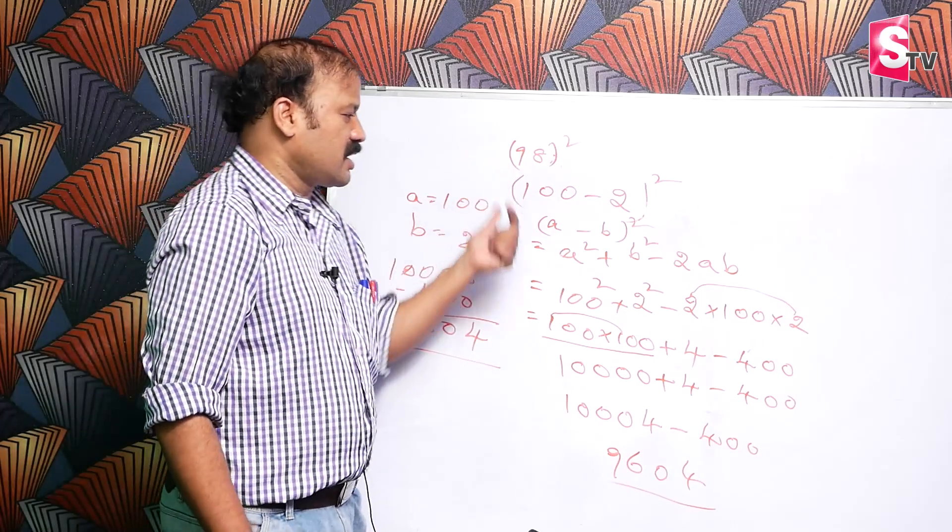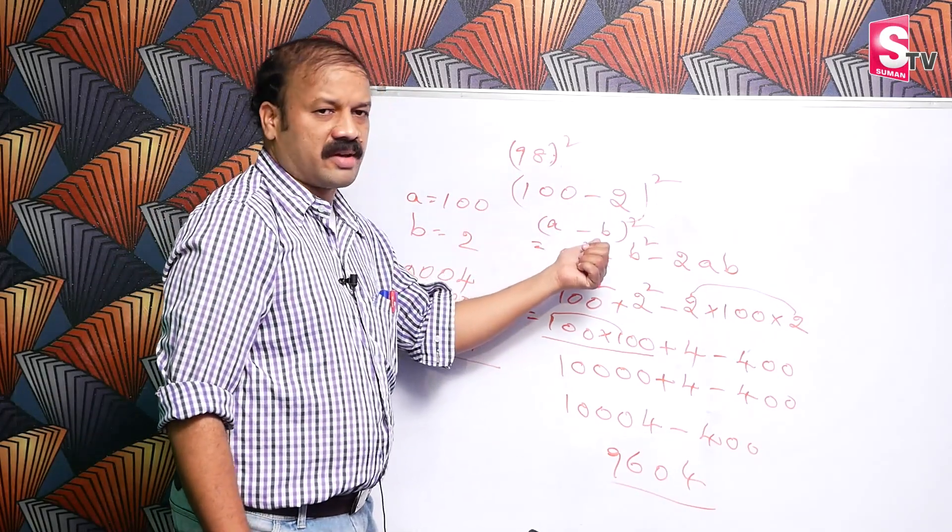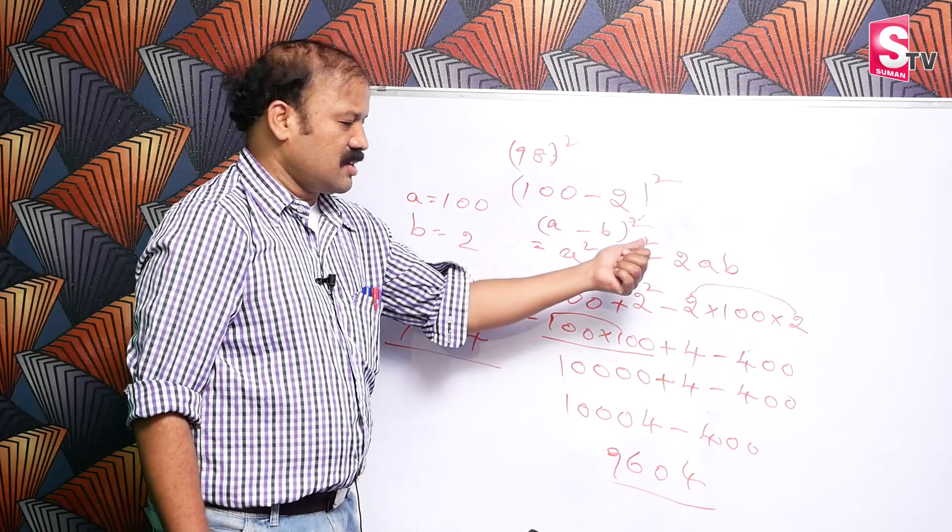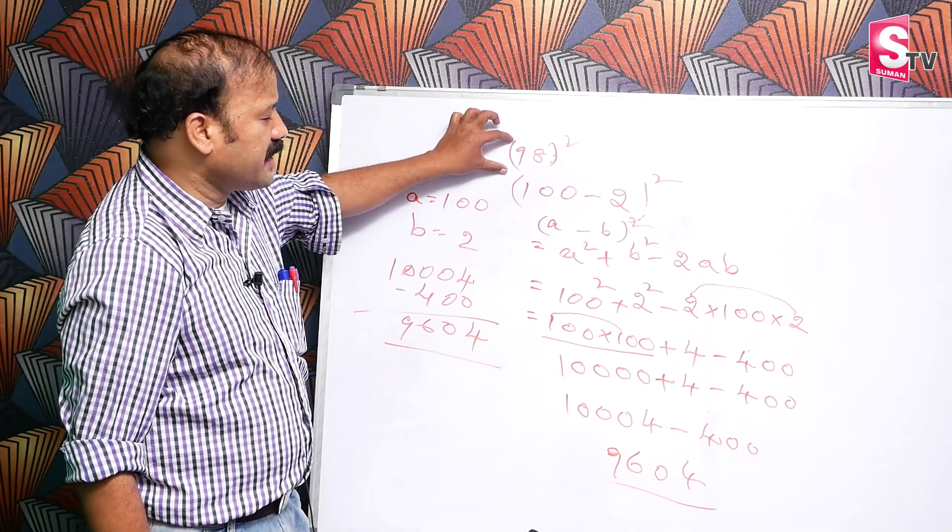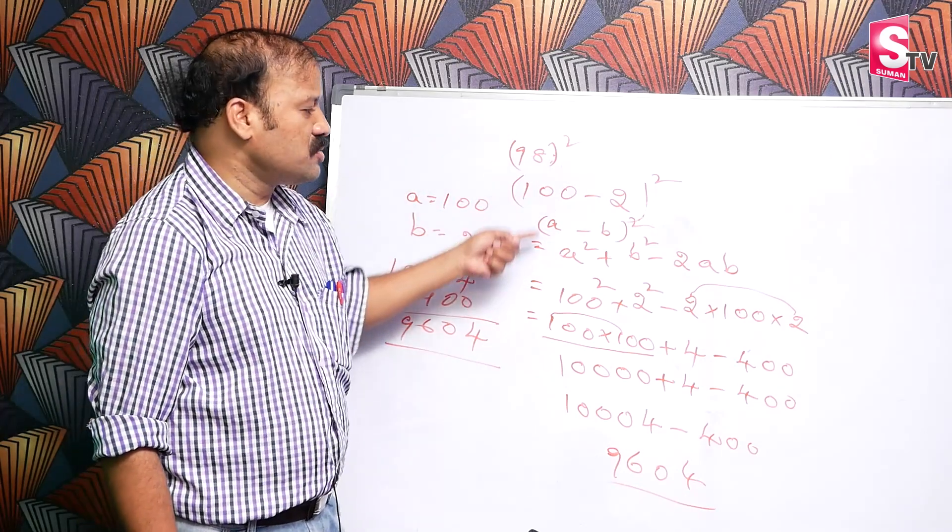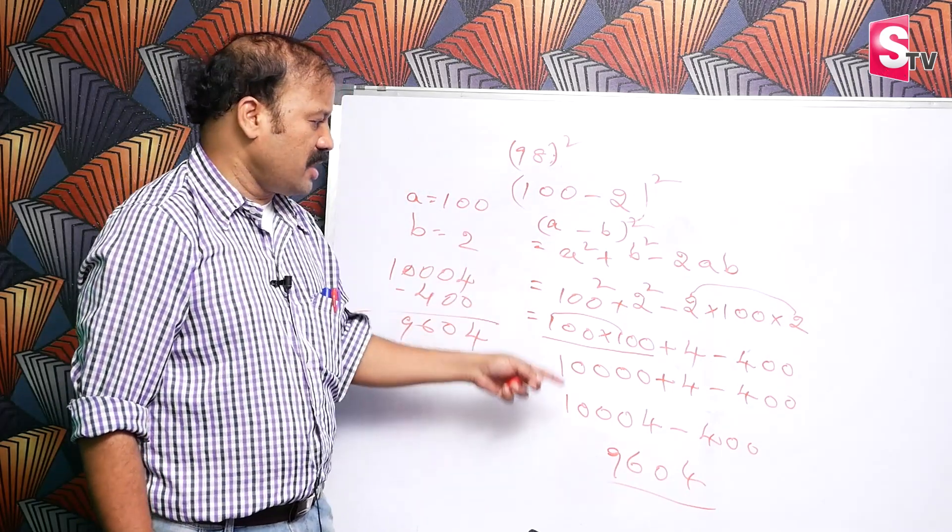Use this formula, a minus b whole square: a square plus b square minus 2ab. Use that formula to solve the sums. The formula: 98 into 98 equals 9,604 using the formula.